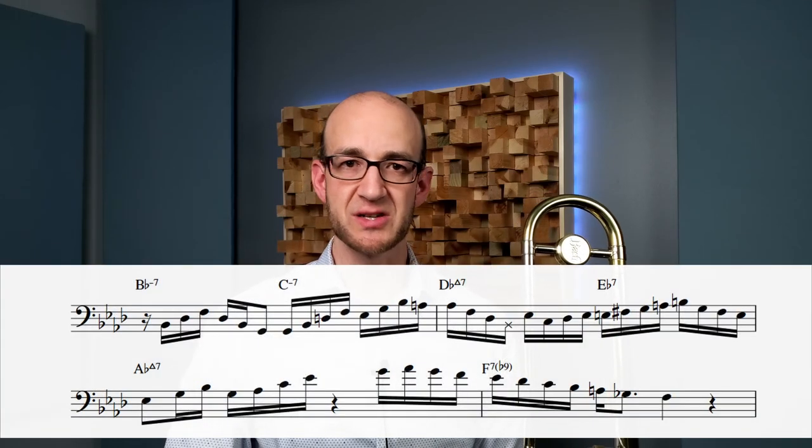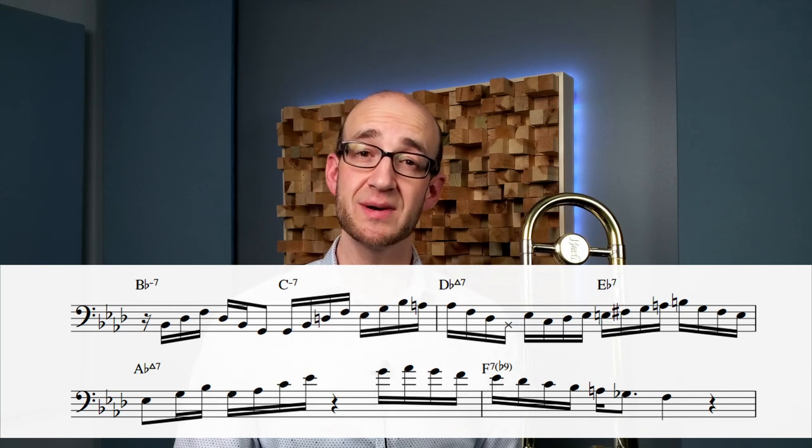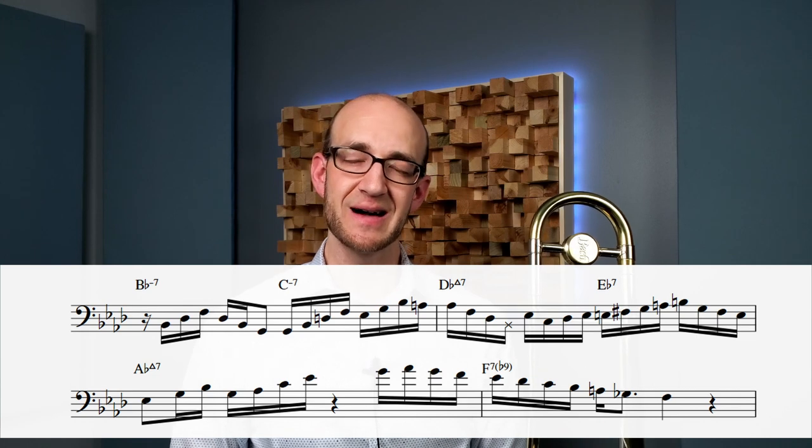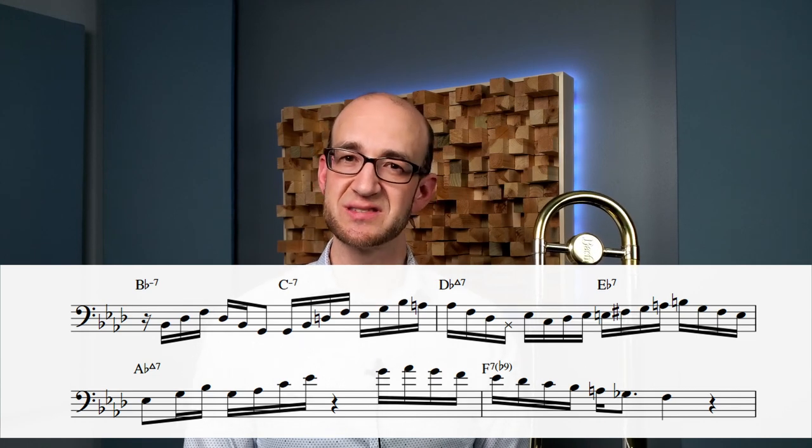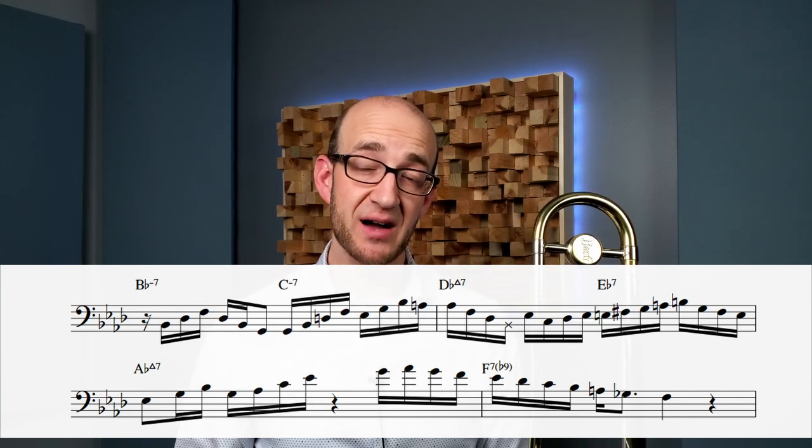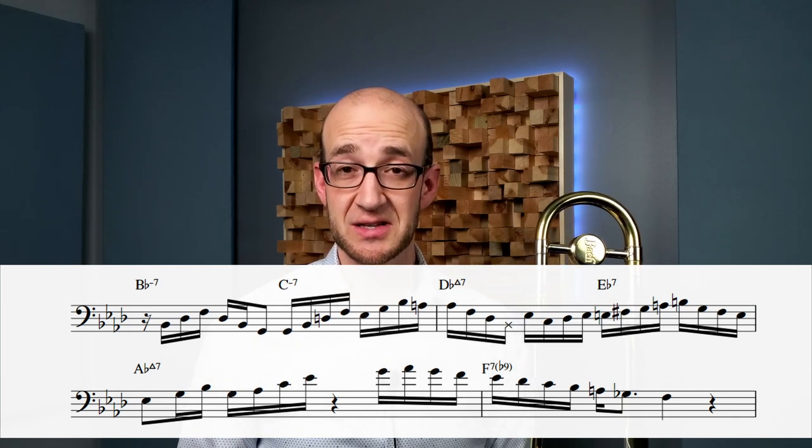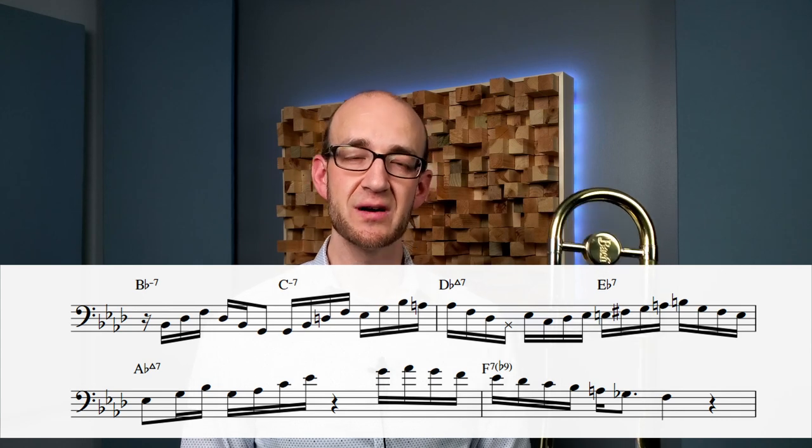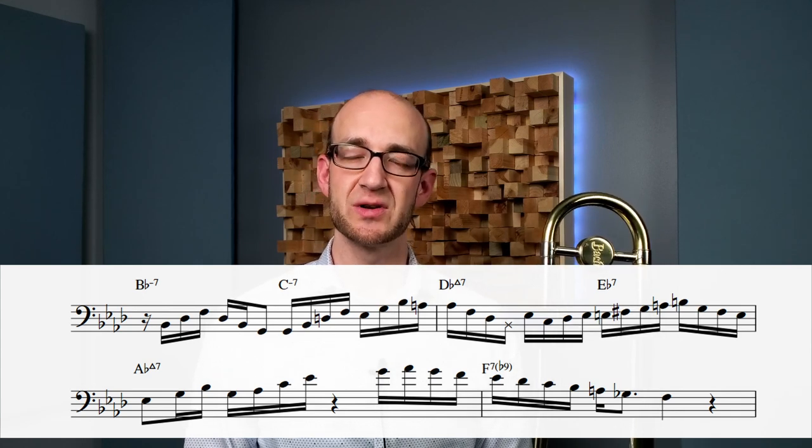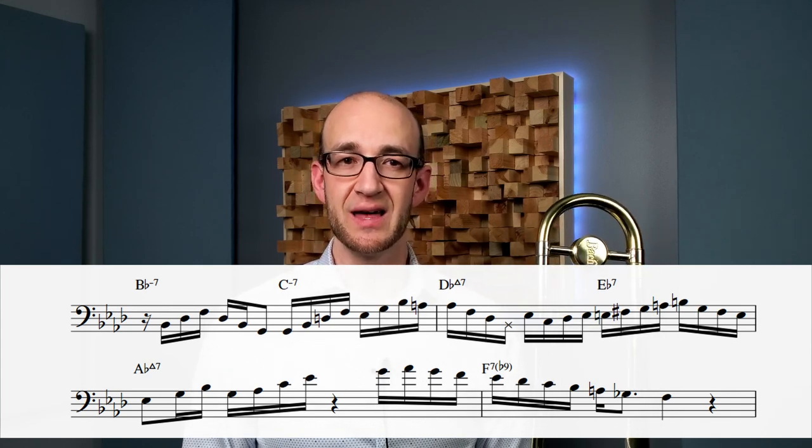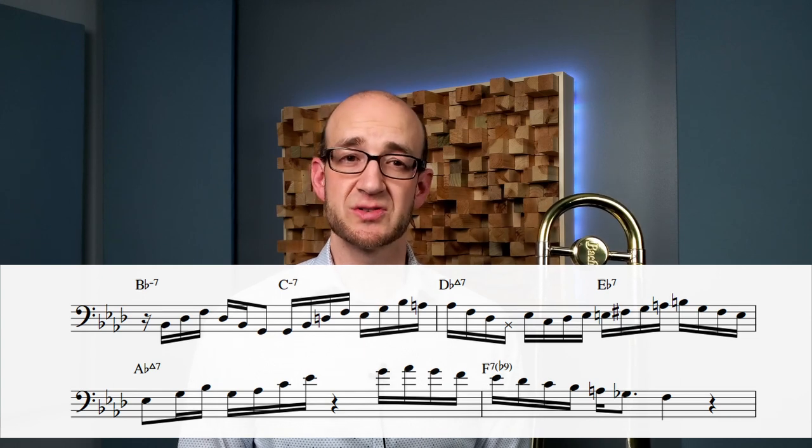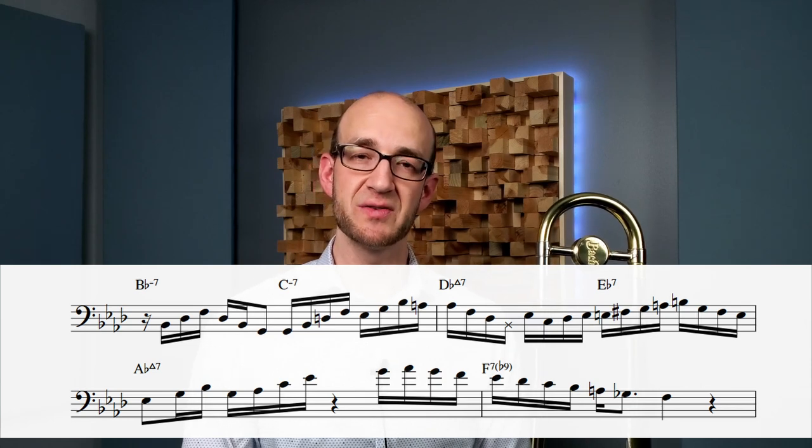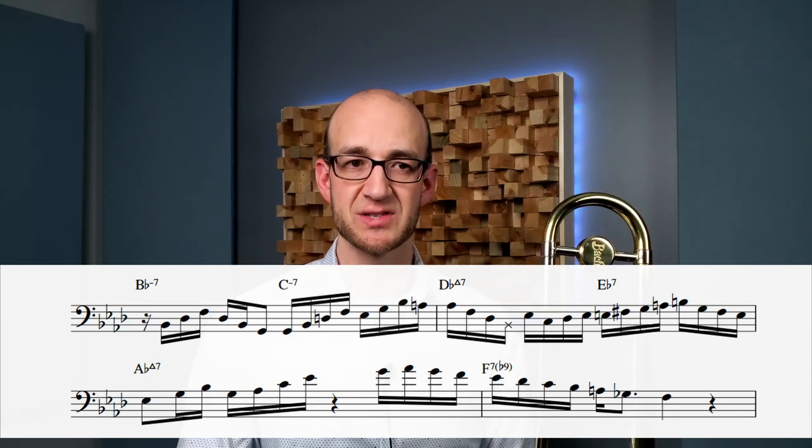That B-flat minor 7 chord, he just arpeggiates up, back down, and then goes all the way down to the G. Because in the next chord, that C minor 7, he's almost implying like a G minor to a C minor sound, almost like a 2-5-1. It doesn't actually go to F like it would, and obviously the 5 chord is minor, but it's very much that type of sound, almost like a 2-5-1 going to an F minor thing. And then when he gets that D-flat major 7 chord, he totally treats it like a B-flat minor 7 chord and treats it like a 2-5-1. So a B-flat minor to E-flat 7, resolving to A-flat.